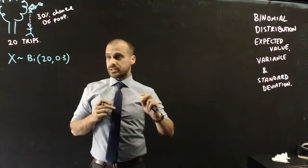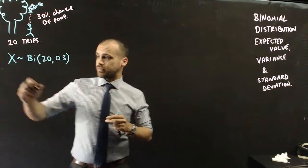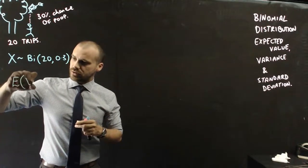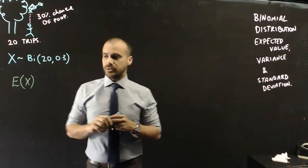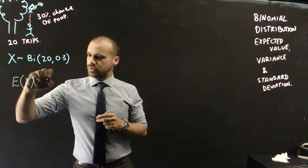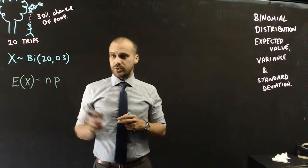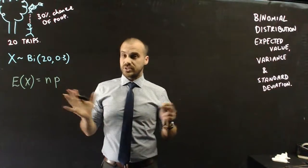Okay, so now we're going to do the expected value. And we use a formula for that. It's really straightforward. The expected value for the random variable X is equal to NP. N, the number of trials, P, the number of successes.